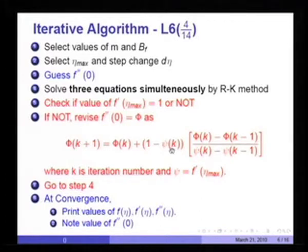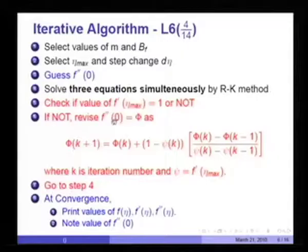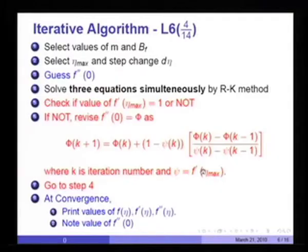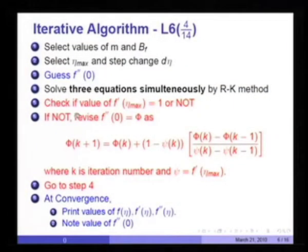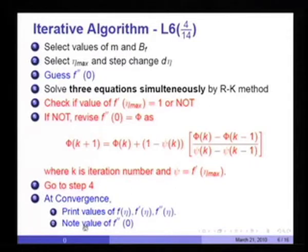It is simply a linear interpolation of the errors on both sides, so that each successive guess gives a more accurate f''(0). If I denote f''(0) as φ, then φ_{k+1} = φ_k + (1 − ψ_k)(φ_k − φ_{k−1}), where k is the iteration number and ψ is the value of f'(η_max) predicted at η_max. I sense which way to move for f''(0) by observing the value of f'(η_max). At convergence, I print values of f, f', and f'', and note the value of f''(0) required for calculation of the skin friction coefficient.